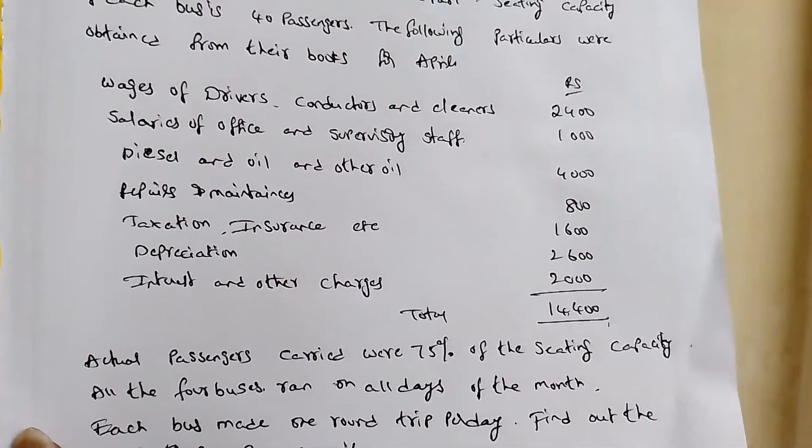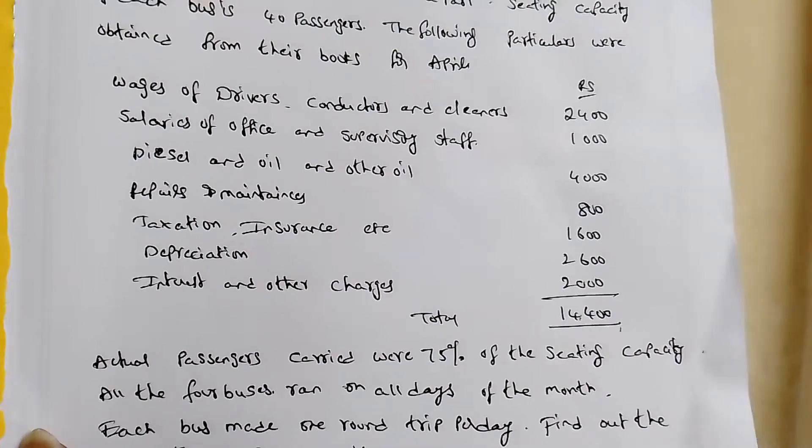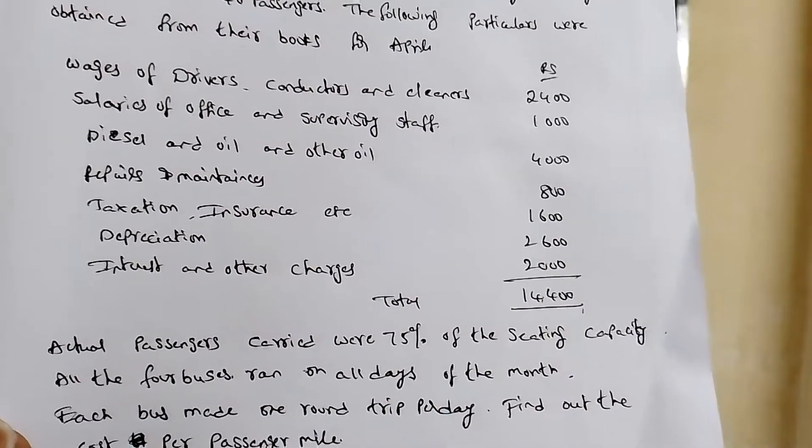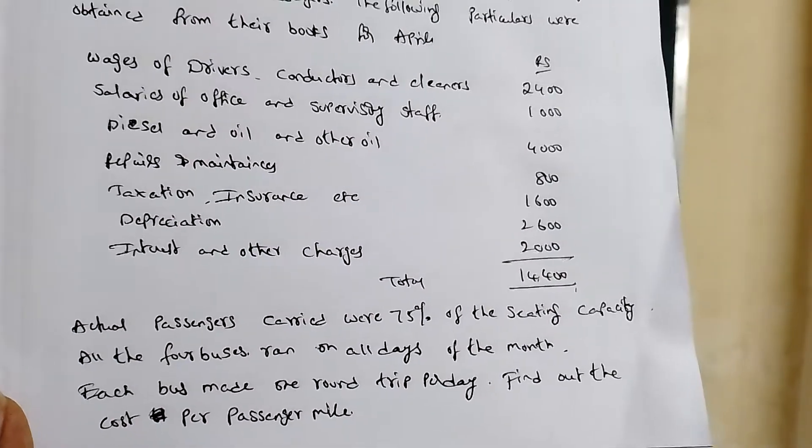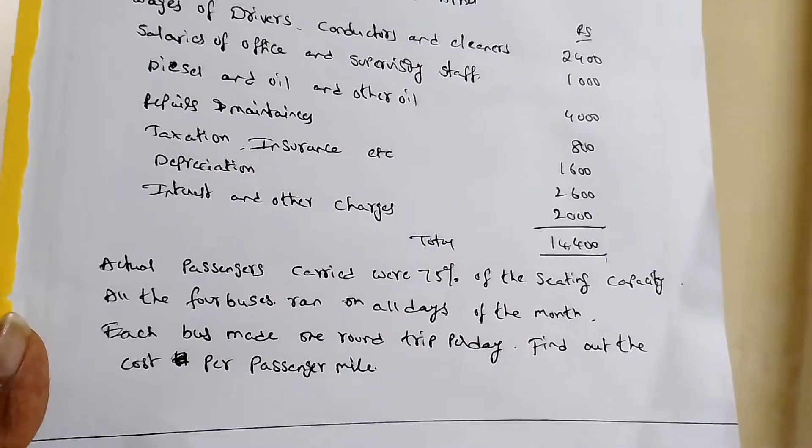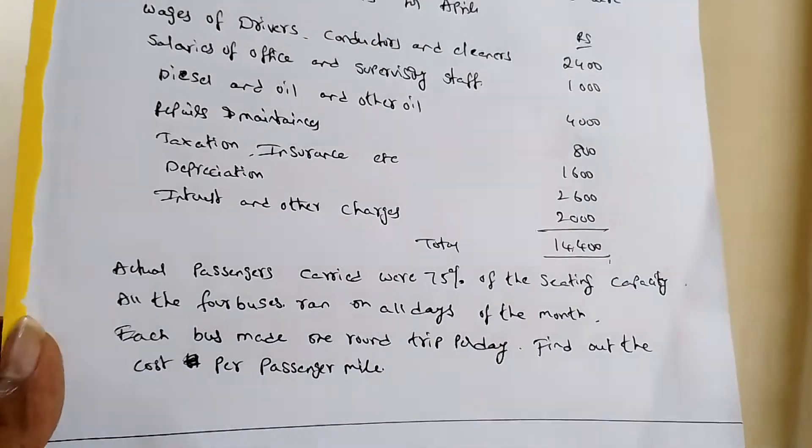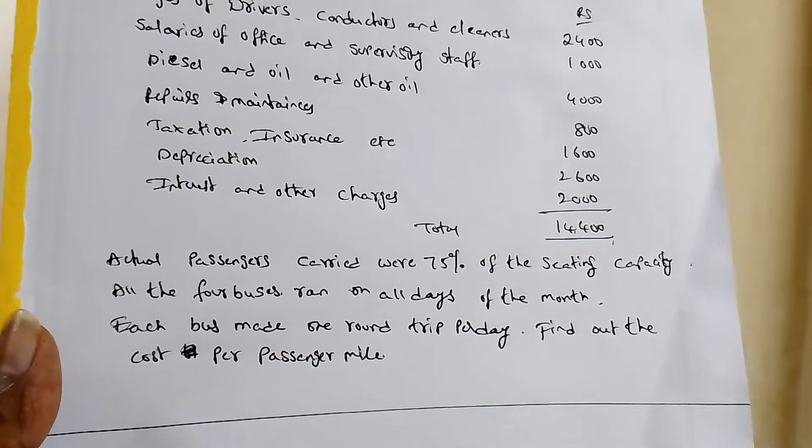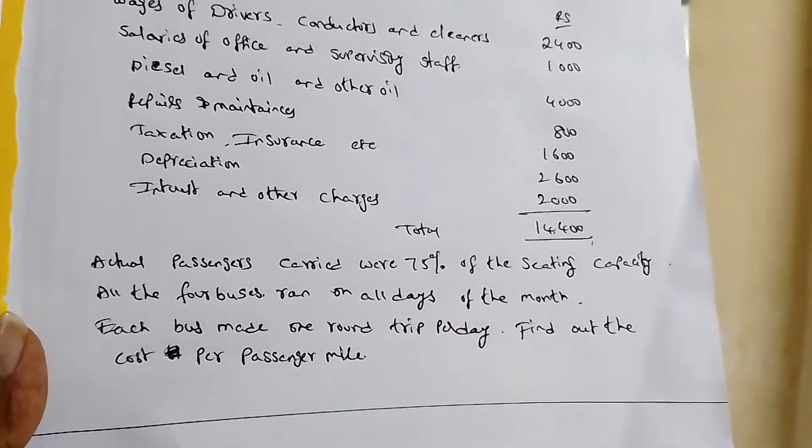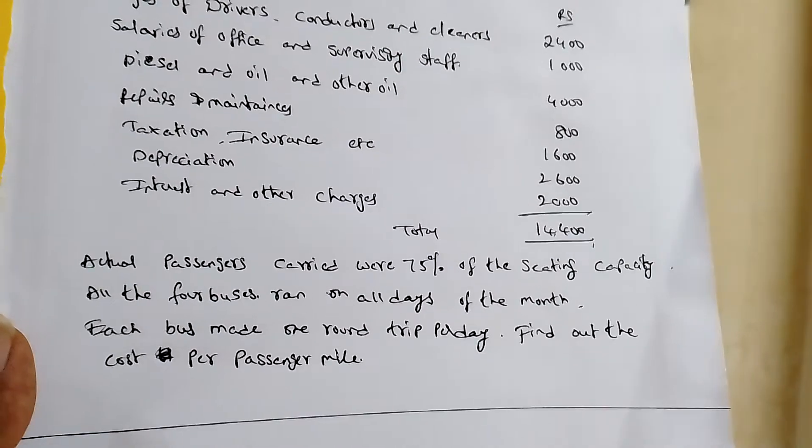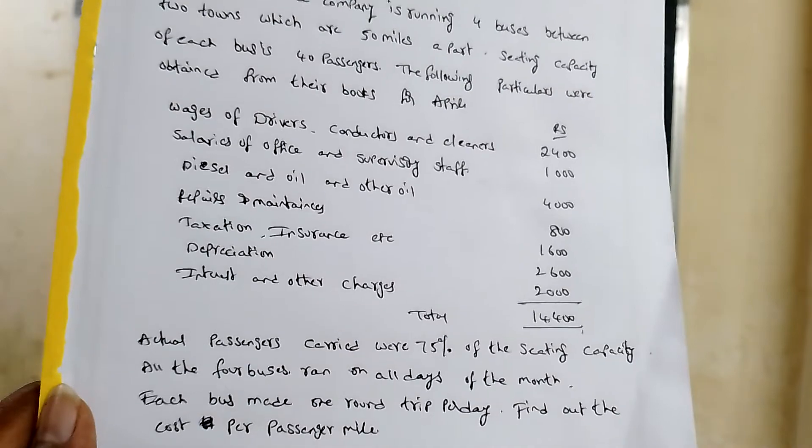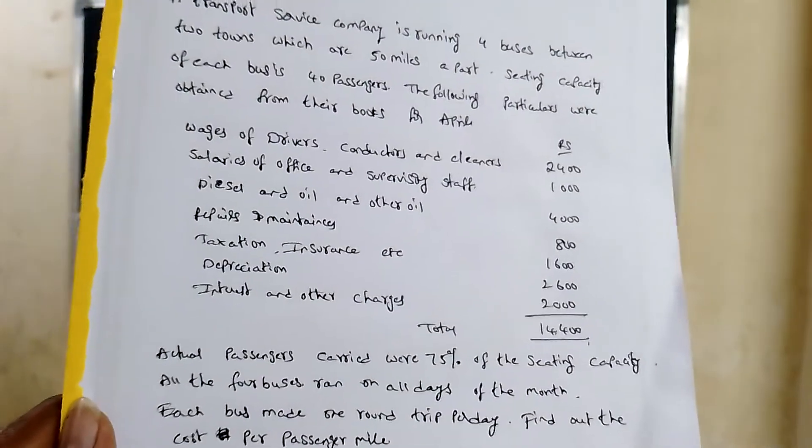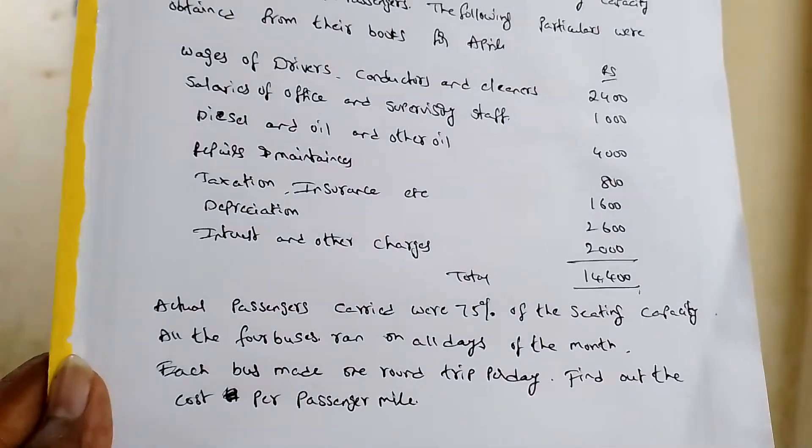Diesel and oil and other oil 400 rupees, repairs and maintenance 800 rupees, taxation and insurance 1600 rupees, depreciation 2600, interest and other charges 2000 rupees, total 14,400 rupees.